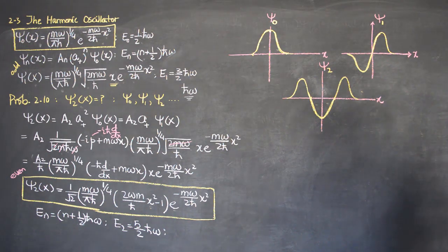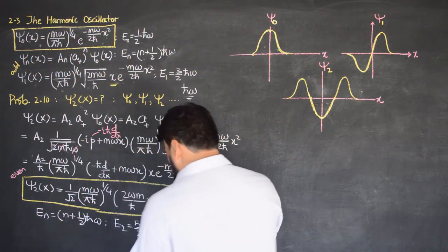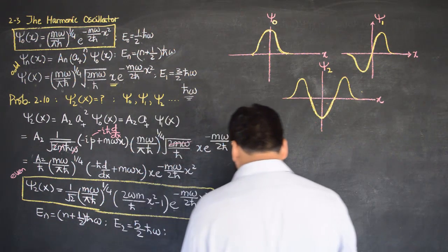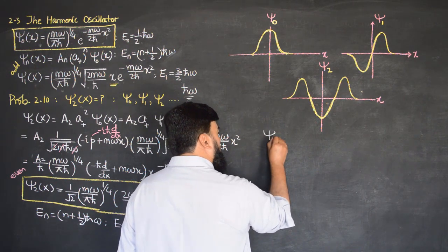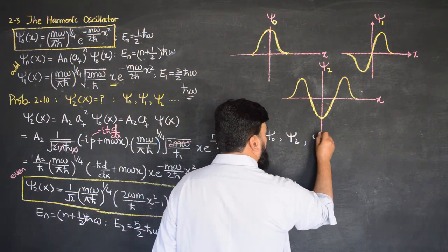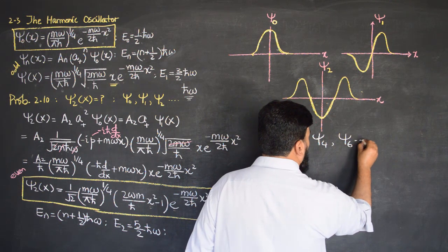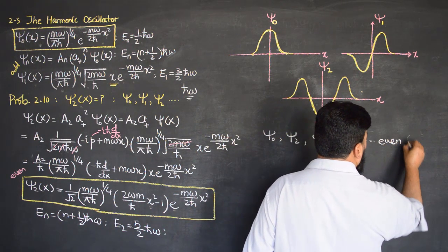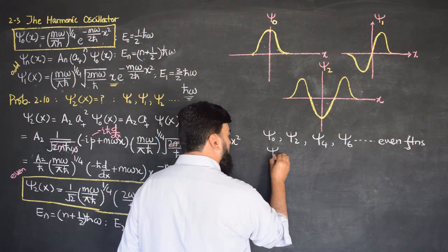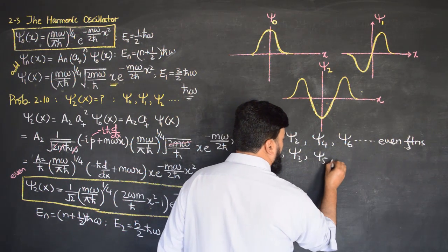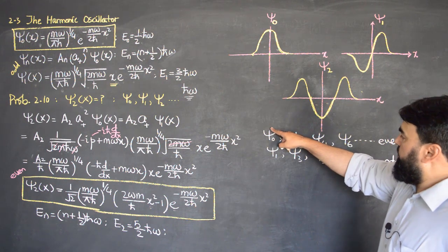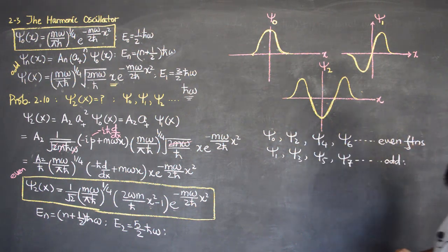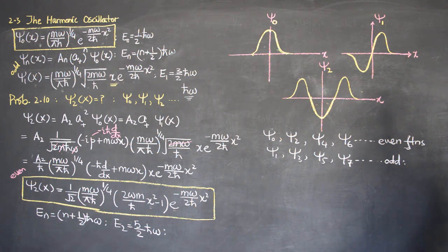So psi_1 is an odd function. We have plotted psi_0, psi_1, and psi_2. We can check that psi_0, psi_2, psi_4, psi_6 are all even functions, while psi_1, psi_3, psi_5, psi_7 are all odd functions. So the states of the harmonic oscillator alternate: even, odd, even, odd.